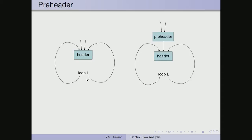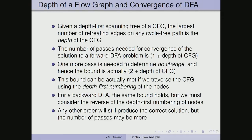We also need to understand the concept of a pre-header, which will be required in the algorithm for loop invariant code motion. When a loop header has many incoming paths, it is convenient to make the header receive just one input by routing all external inputs through a pre-header node. The semantics are the same — the loop now has only one input from outside, and the rest of the edges are back edges.